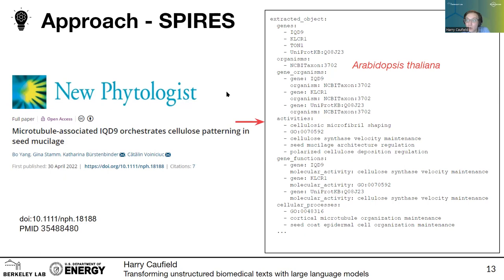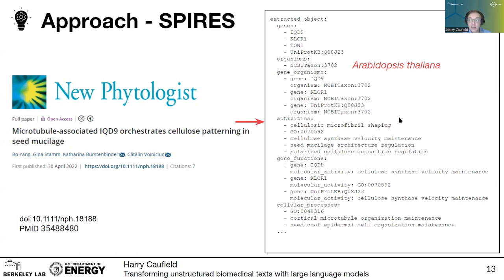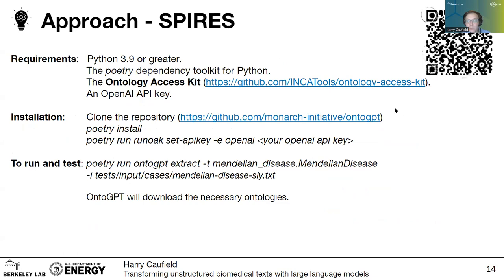This also works on more biological or ecological papers. In this case, we have a paper about cellulose patterning in seeds, with Arabidopsis as the model organism. We can extract that as part of our model, along with the genes, the relationships between genes and organisms in case you have multiple organisms in the input text. It can also extract particular activities, gene functions, and cellular processes, aligning them to GO terms wherever possible. In some cases, where we don't have a matching GO term, that highlights something GO may be lacking, or a very complicated activity that our LLM can still extract for us.